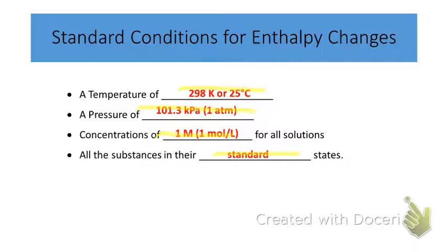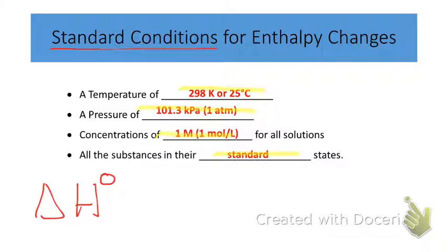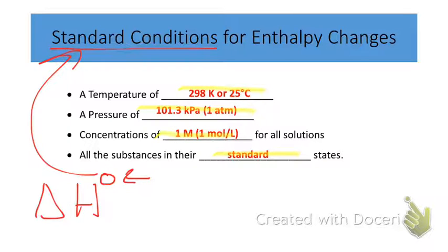When you run a reaction under these conditions, these are known as our standard conditions. To indicate that standard conditions are occurring, we often write with delta H a little sign called a knot. This knot sign indicates that we are running our reaction at these standard conditions. If that knot is not there, then the conditions of the reaction are something different.